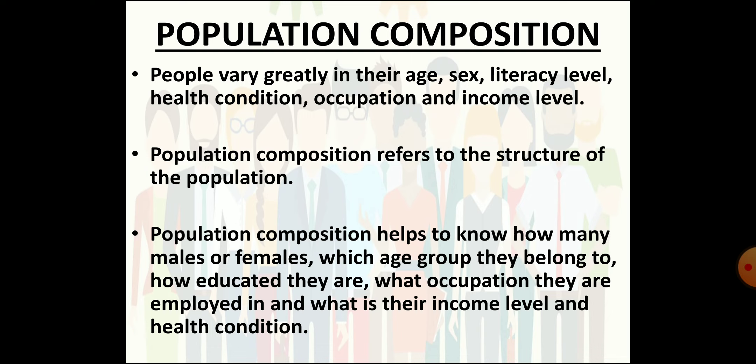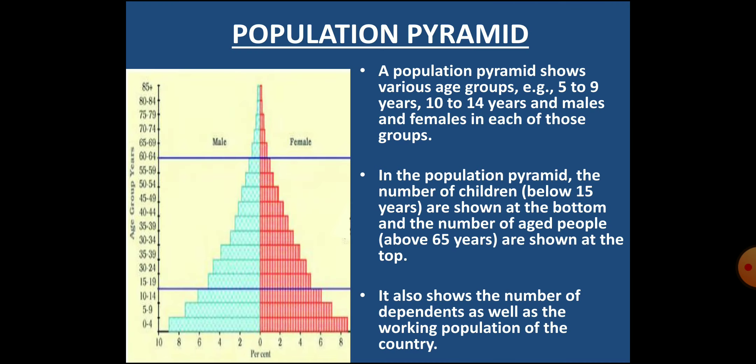With the help of the composition of population, we get to know the number of males and females, the age group they belong to, their educational level, occupation, income level and health status. We can understand the population composition of a country with the help of a population pyramid, also known as an age-sex pyramid, because it expresses two things simultaneously.